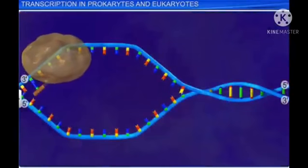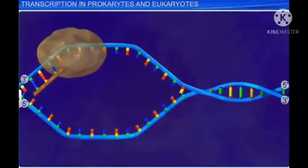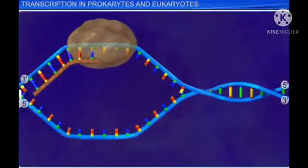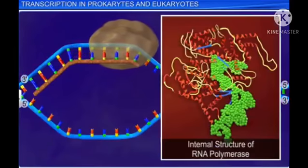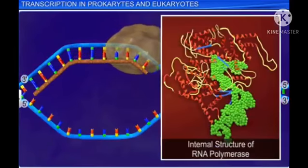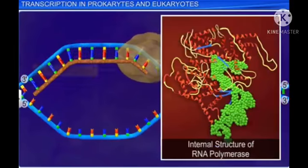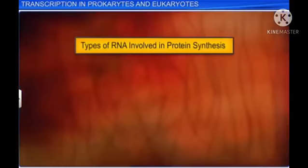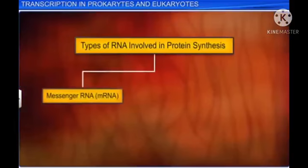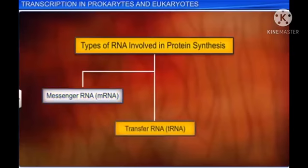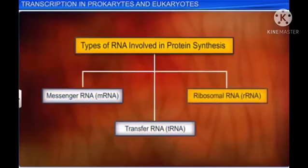In prokaryotes such as bacteria, only one DNA-dependent RNA polymerase enzyme catalyzes the transcription of all types of RNA. There are three types of RNAs involved in the process of protein synthesis: messenger RNA or mRNA, transfer RNA or tRNA, and ribosomal RNA or rRNA.